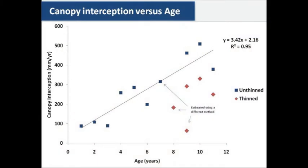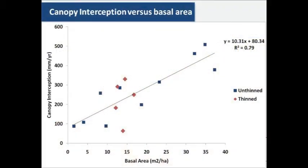Canopy interception also increases with age, which is what we would expect as the canopies develop and thicken. It's also quite a significant amount in the Florentine Valley — a lot more than I've measured in other locations. I'm still in the process of checking for errors in that data, so please don't take this as the final result. But you can see that when a forest is thinned, the amount of canopy interception is reduced. And here's an example of a basal area versus canopy interception relationship for the Florentine Valley, showing again a good strong relationship between those two parameters.